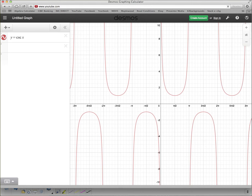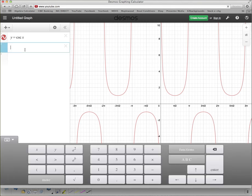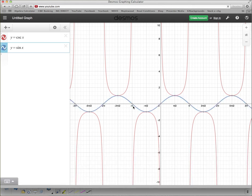So again, here's what it looks like on Desmos. And that's without the sine on top of it. If I want to put sine underneath it, y equals sine x.